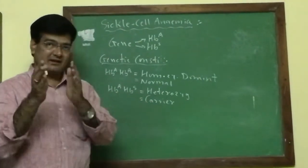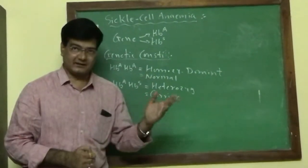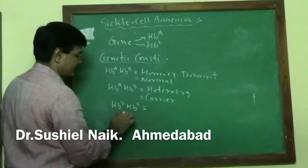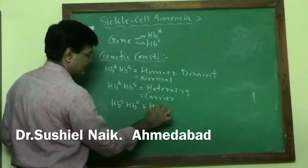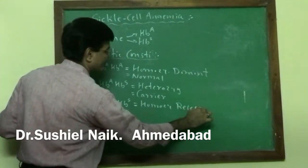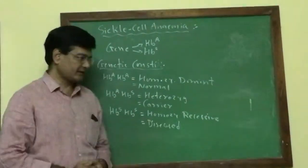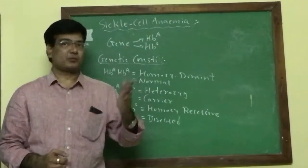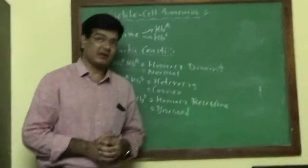If the genetic constitution is HBS HBS, it is homozygous recessive condition. In the disease condition, the hemoglobin formed is not proper. Sickle cell anemia is a qualitative disease.